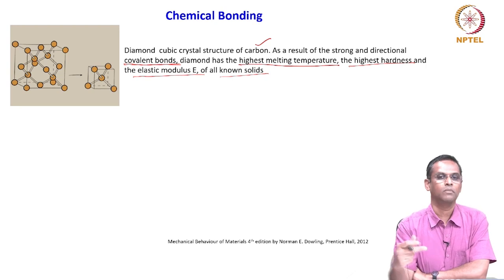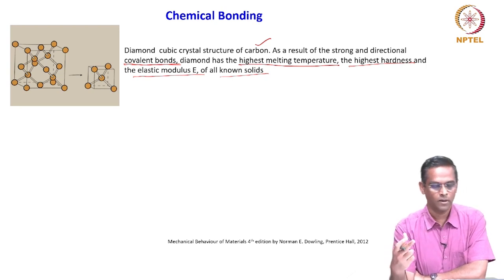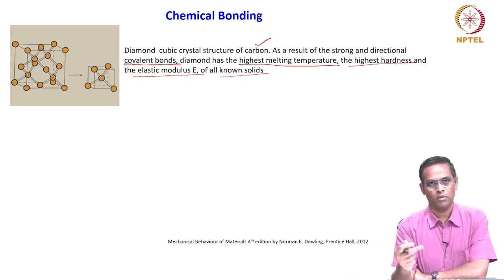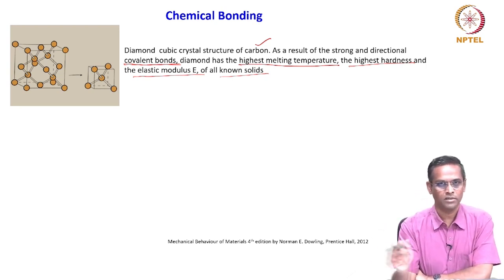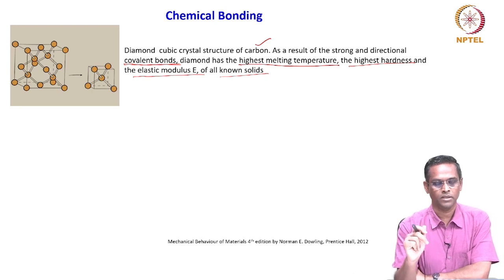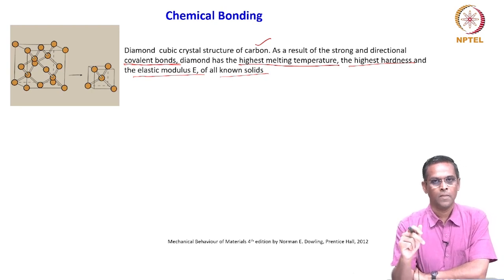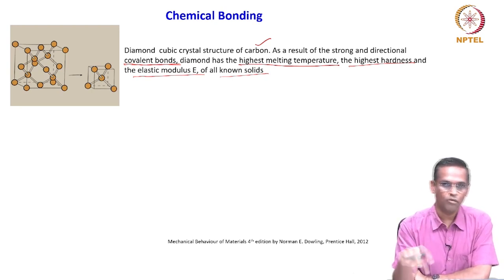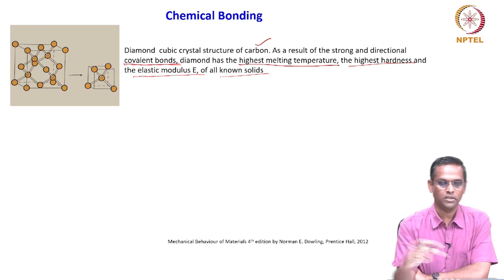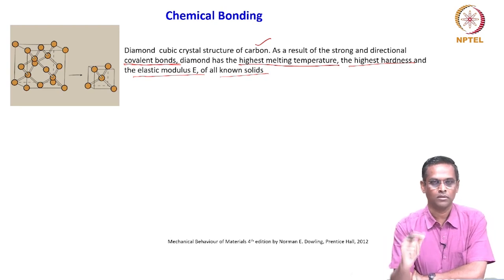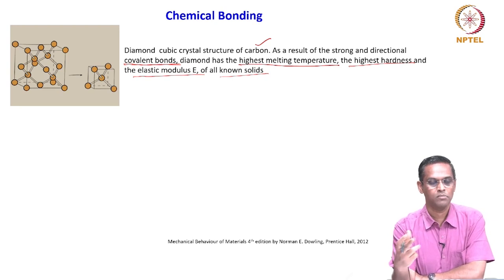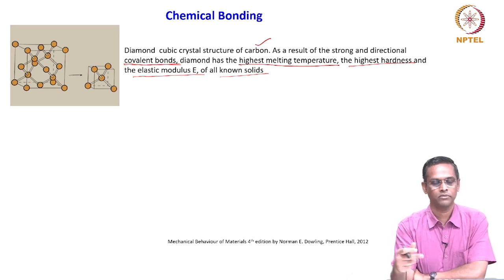If you have a covalent bond in all directions, such as in diamond where each carbon has a tetrahedral unit with covalent bonds to all neighbors — that is why they are very strong. A material which exhibits this kind of uniform directional covalent bonds with its neighbors generally exhibits high melting point, high hardness, and high elastic modulus.